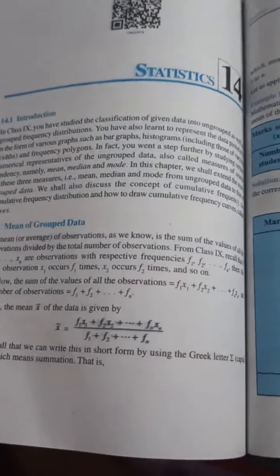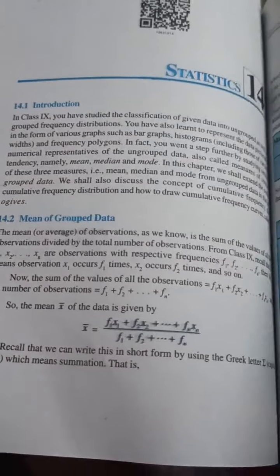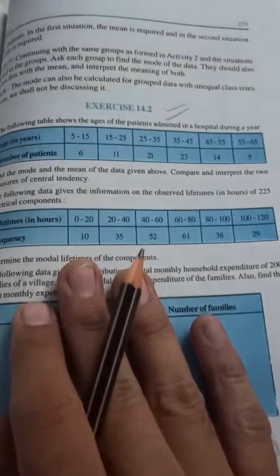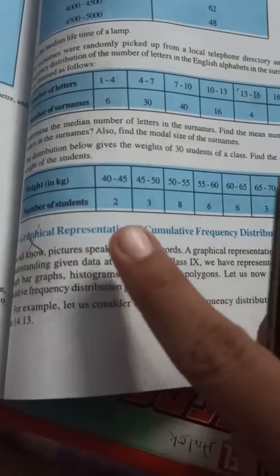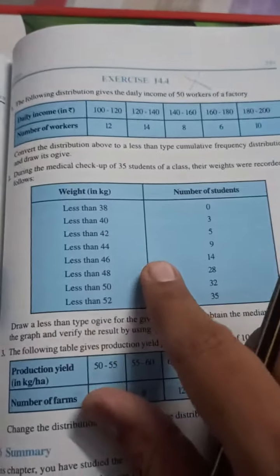Chapter 14: Statistics. Exercise 14.1 on mean — do the full exercise along with all preceding examples. Exercise 14.2 on mode — do the full exercise with all preceding examples. For Exercise 14.3 on median, do all preceding examples and the full exercise. What is omitted? From the section on graphical representation of cumulative frequency distribution onwards, the whole remaining chapter is omitted, including Exercise 14.4 which is fully omitted.